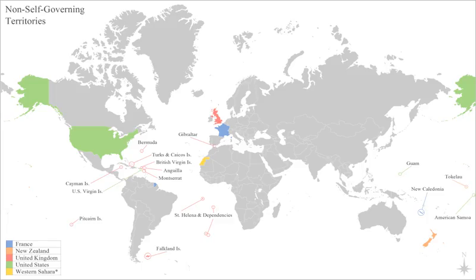In history, a colony is a territory under the immediate complete political control of a state, distinct from the home territory of the sovereign. For colonies in antiquity, city-states would often found their own colonies. Some colonies were historically countries, while others were territories without definite statehood from their inception.